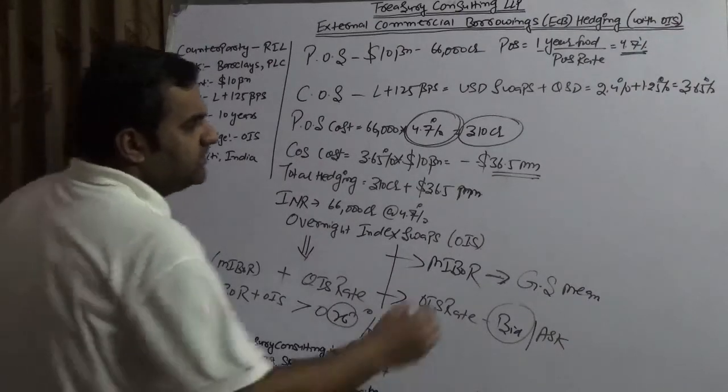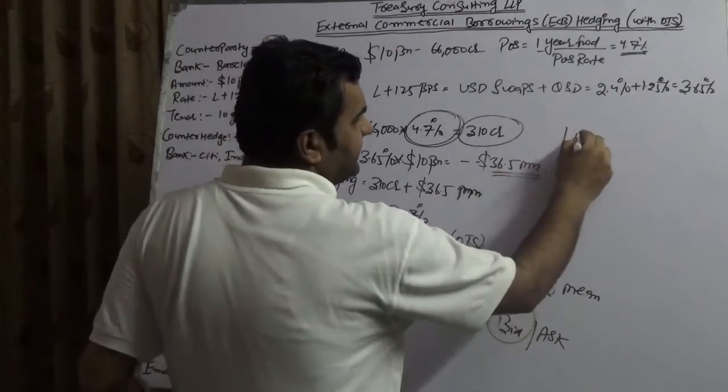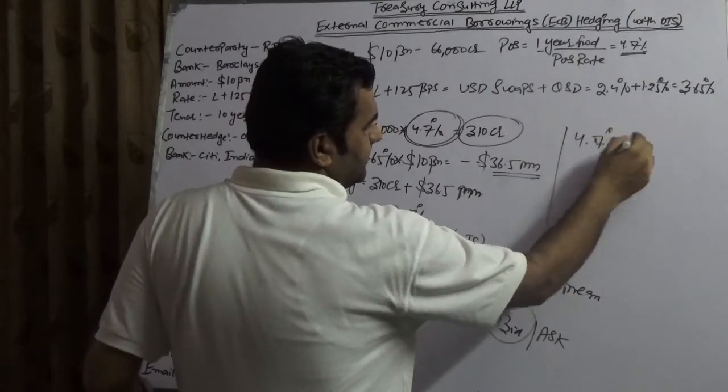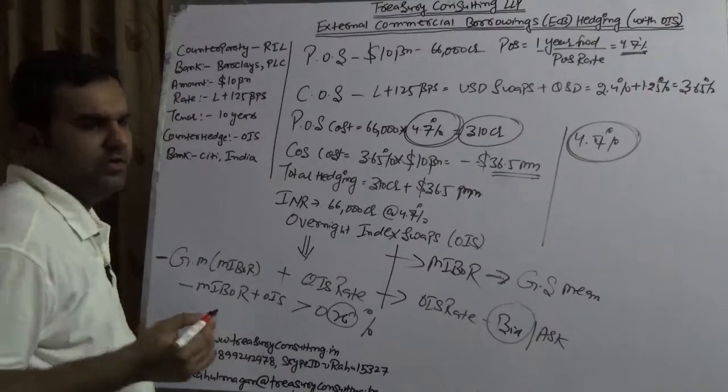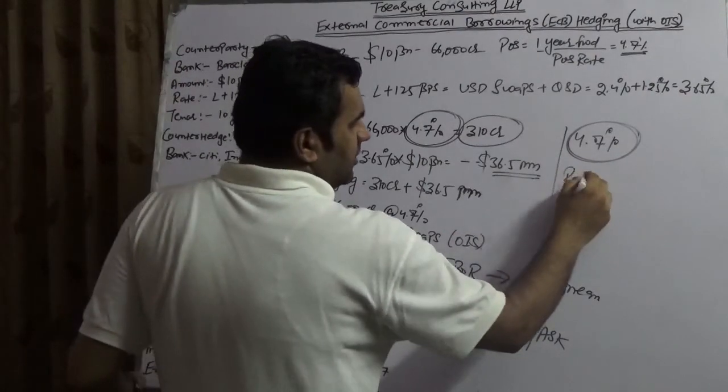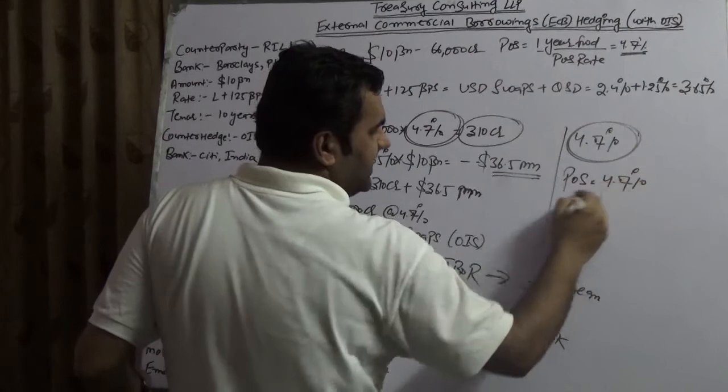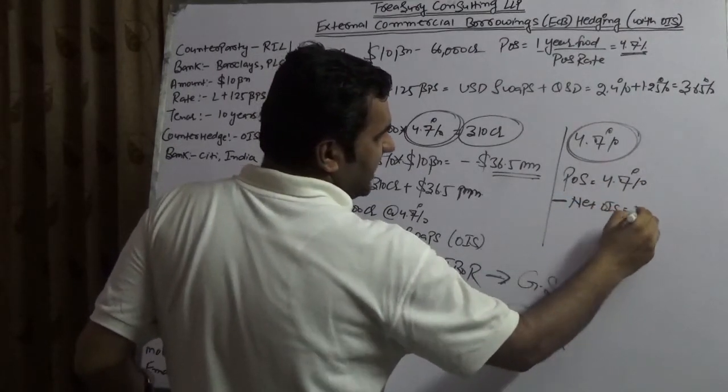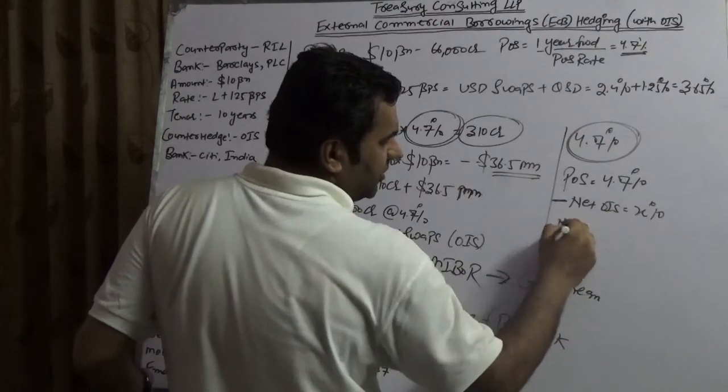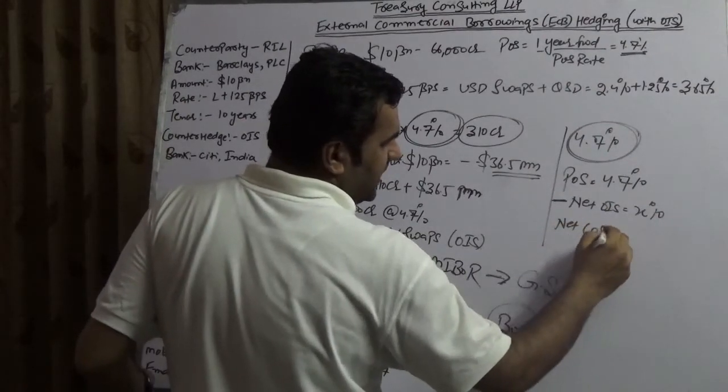That would be adjusted. Assuming this is X percent, that X percent would be adjusted from this 4.7% of POS. So you would have the POS rate of 4.7% minus net of net OIS, which is X percent. The net cost of Reliance would be 4.7% minus X%.